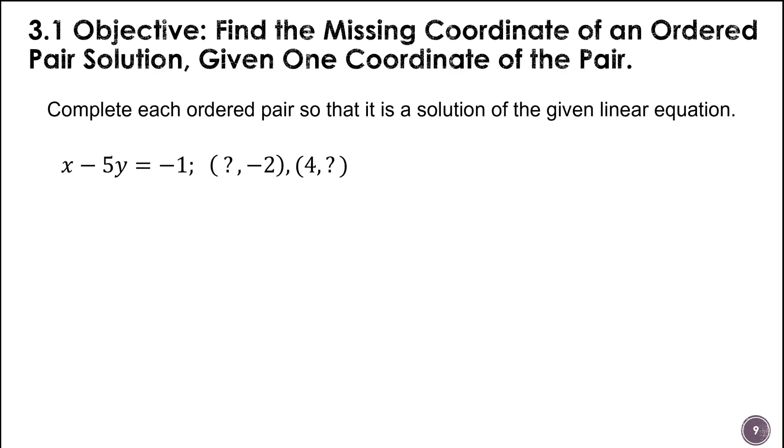On this one, we're looking for the missing part. We know one part, but we don't know the other part. This is why you had to learn how to solve equations in Chapter 2. Because basically, we're going to substitute in the part we know, and then we're going to find the missing part. So on the first one, we're going to put negative 2 in for y. So that's x minus 5 times negative 2 equals negative 1. So x plus 10. This is how you find ordered pairs - you pick a number to go in for x or y and find the other coordinate. So subtract 10, and x is negative 11. So we found that ordered pair.